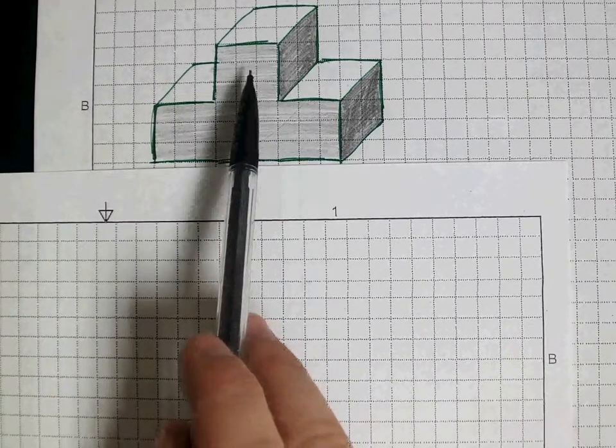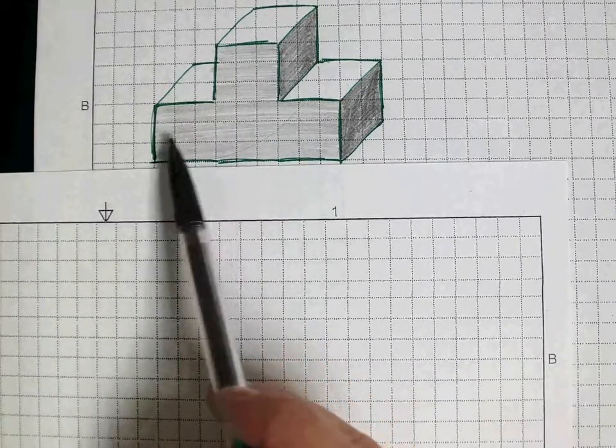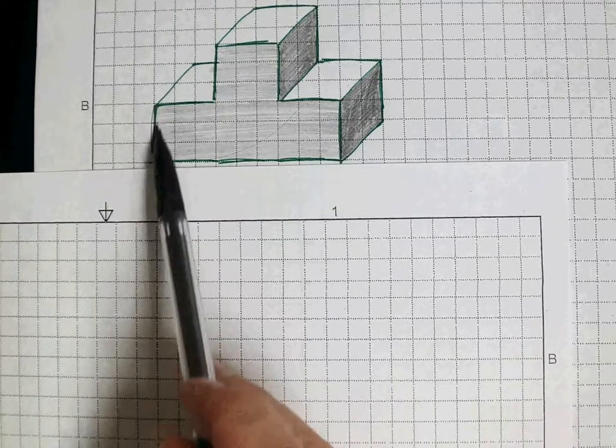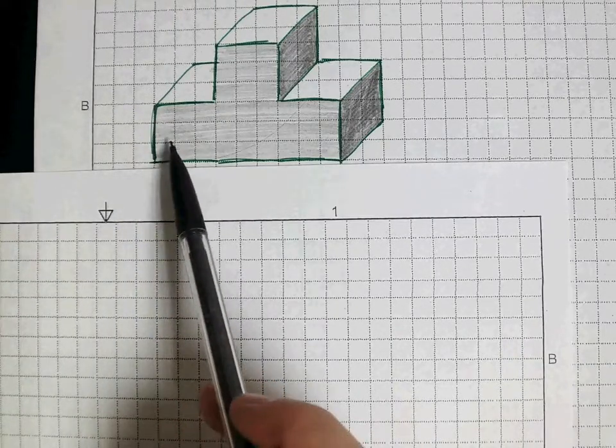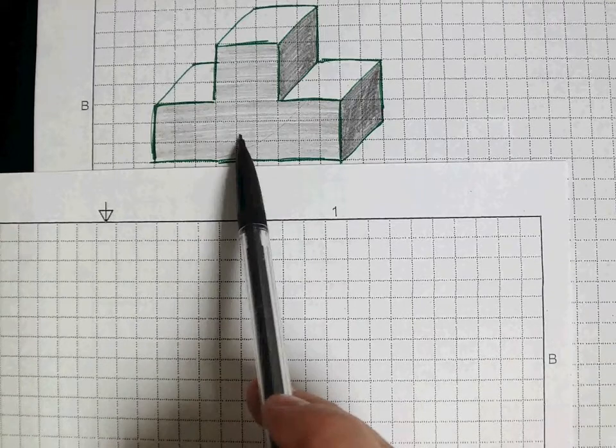Each wooden block we said was three of our grid spaces in each direction, and so we're gonna start with that. We had our three across the bottom which was nine total. So we're gonna start with drawing our first set of lines nine across the bottom.